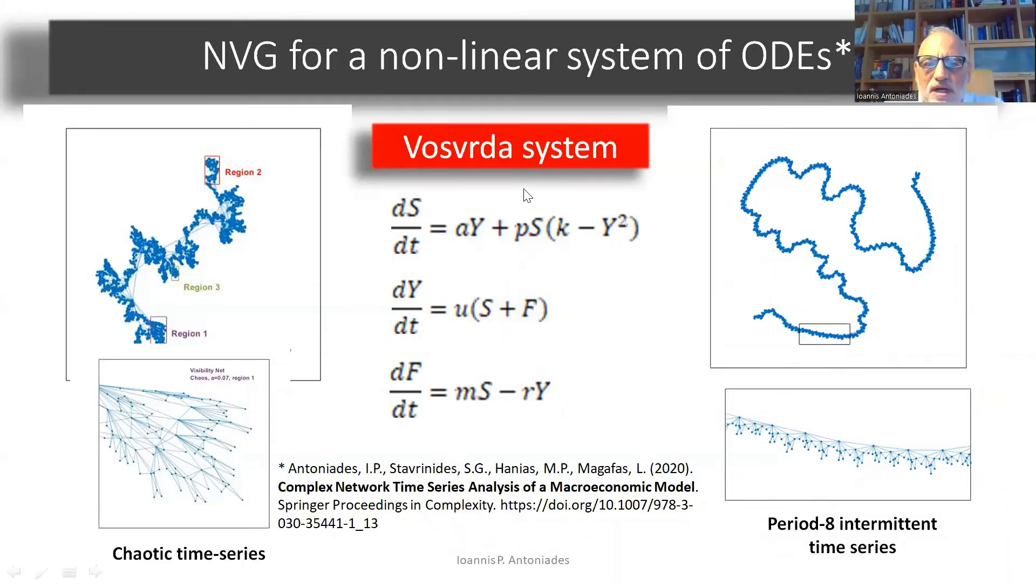Here I will show you some results. This is a set of differential equations called the Vosvrda equations. They come from a macroeconomic model. It's not important what they represent for the moment. But here I show you two time series from this system. The one on the right is periodic or nearly periodic, a period eight orbit. It's in the intermittent region, so it has some chaos in it. And you have on the left a purely chaotic time series resulting in a visibility graph.